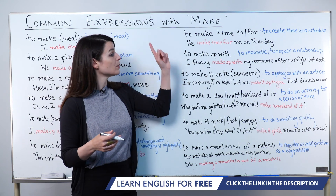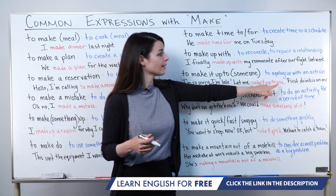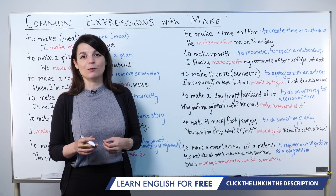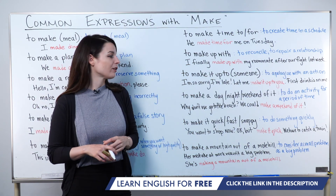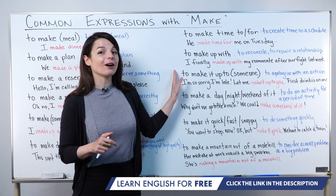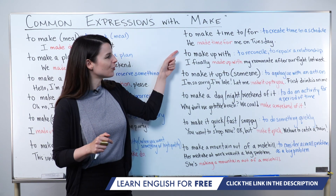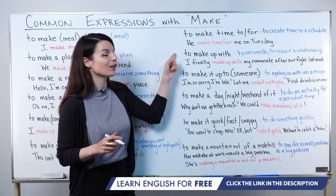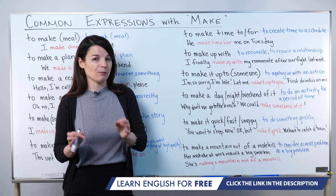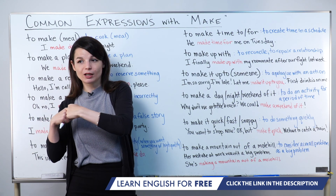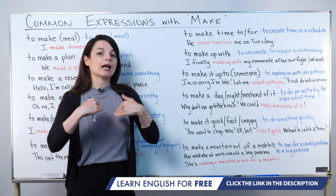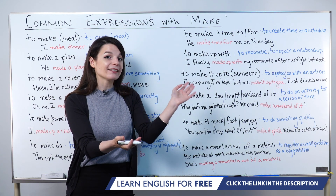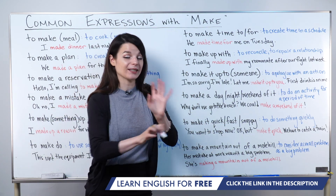In 'make it up to someone,' 'someone' is the person you're addressing — they are waiting for you, you were late, and you decide to fix your error with a gesture. Be careful: don't mix this up with 'to make up with.' To make up with means to repair a relationship generally. To make it up to someone means to repair a past error with a specific action.